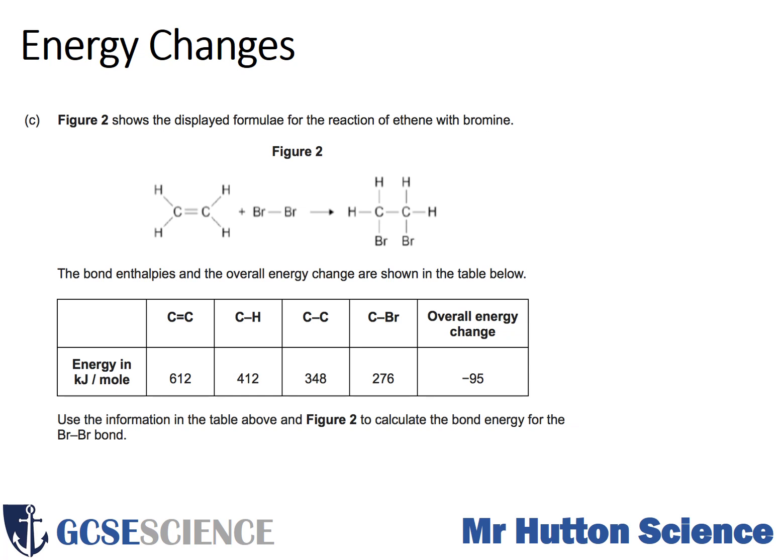There's a question about bond enthalpies or bond energy, which could also link in with quantitative chemistry. The figure shows a displayed formula for the reaction of ethene with bromine. We know it's ethene because it has two carbons and a double bond, following the general formula for alkenes CnH2n. Bromine goes around in pairs as Br2, and they are added across the double bond to make bromoethane. The bond enthalpies and the overall energy change are shown in the table.